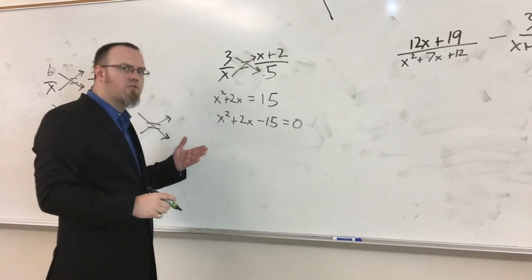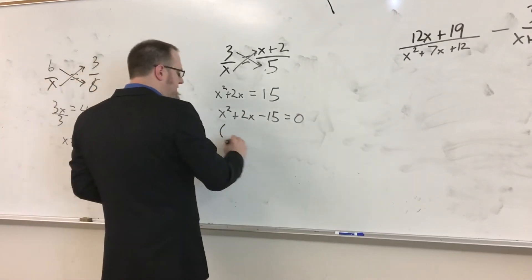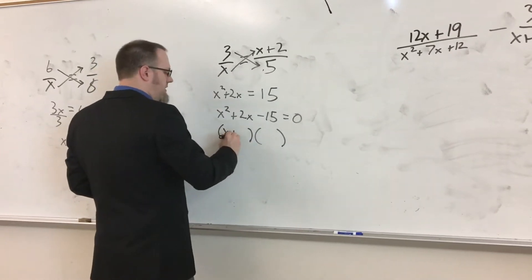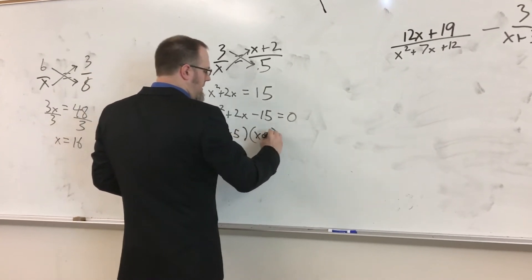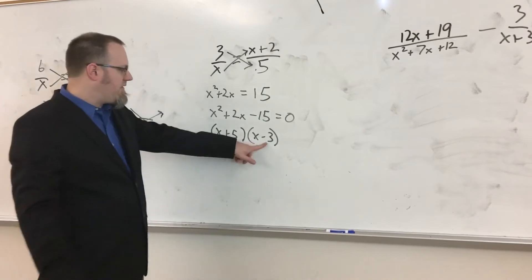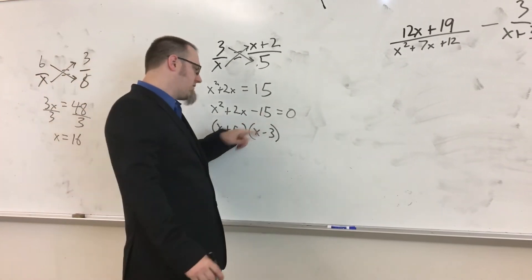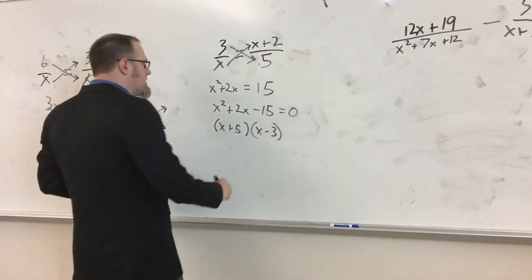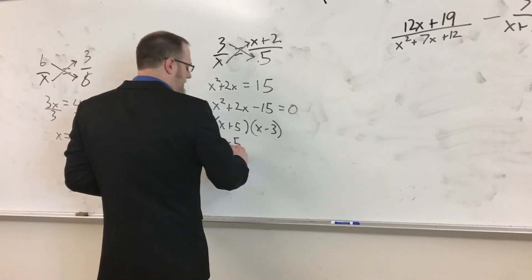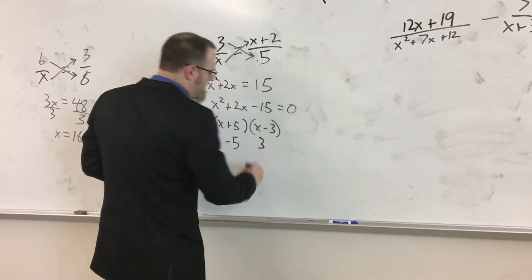Put it to one side because it's quadratic. Now this one's going to factor, and it's going to factor into (x+5) and (x-3). Because the 5 minus 3 will give us the 2 we need in the middle, and 5 times negative 3 gives us a negative 15. That means my two answers are a negative 5 and a positive 3.